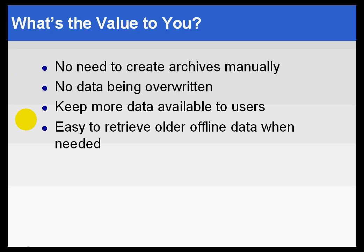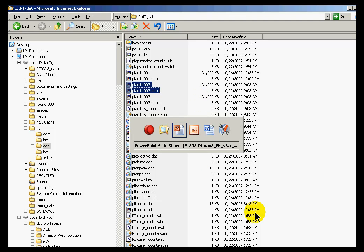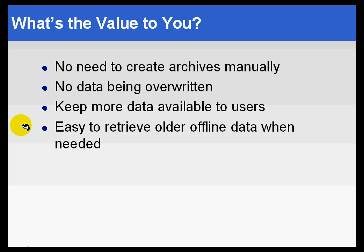You'll be able to keep more data available for users and be able to easily retrieve older offline data when needed — specifically when you have backups stored on disk or tape somewhere. It's a lot easier to retrieve these if you have a good naming convention. Going back to our example: if this archive has been backed up along with its accompanying annotation file, how do you know what's actually in there? Unless you store some kind of a list or annotate your tape with the dates, you really don't have any idea what's in there, and it's not very convenient to inspect those when they're offline. If you follow our recommendations, it's a lot easier to retrieve older offline data simply because the naming convention helps you identify the dates.